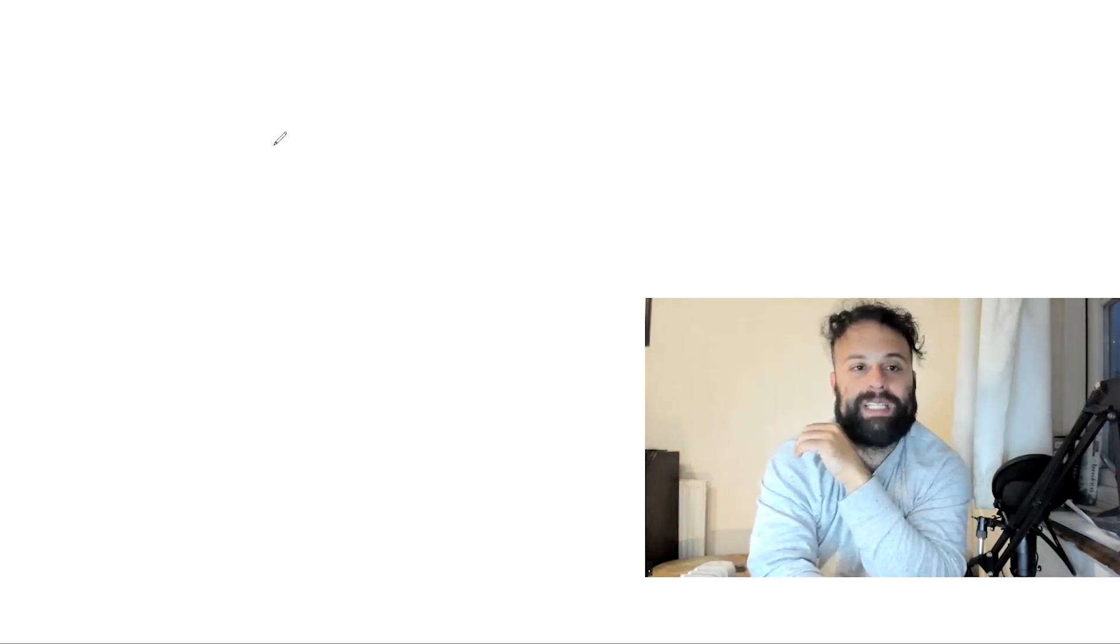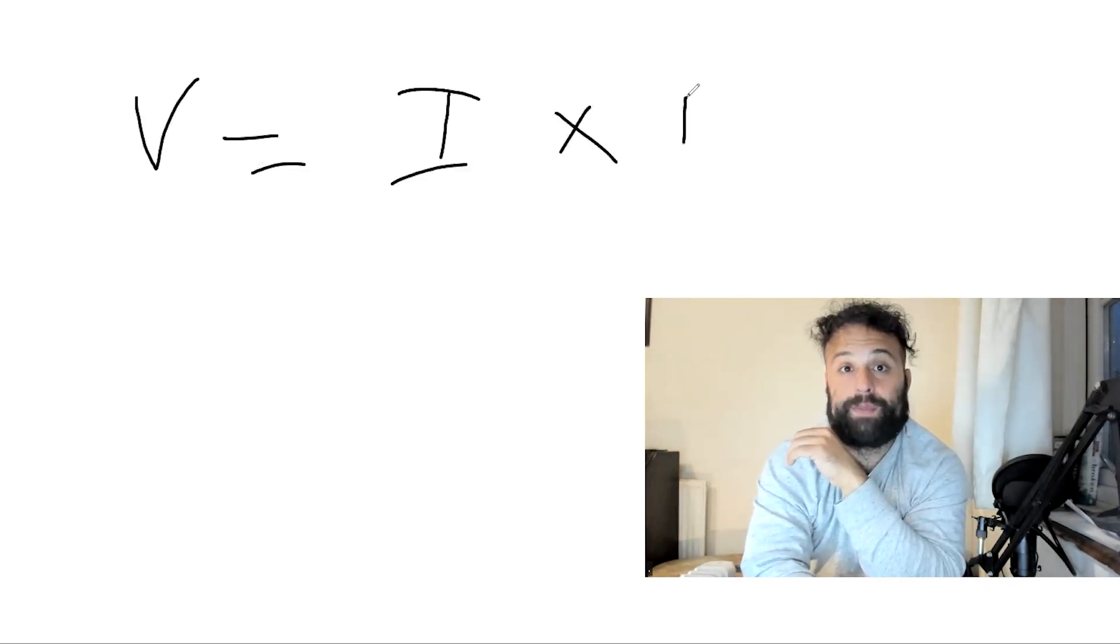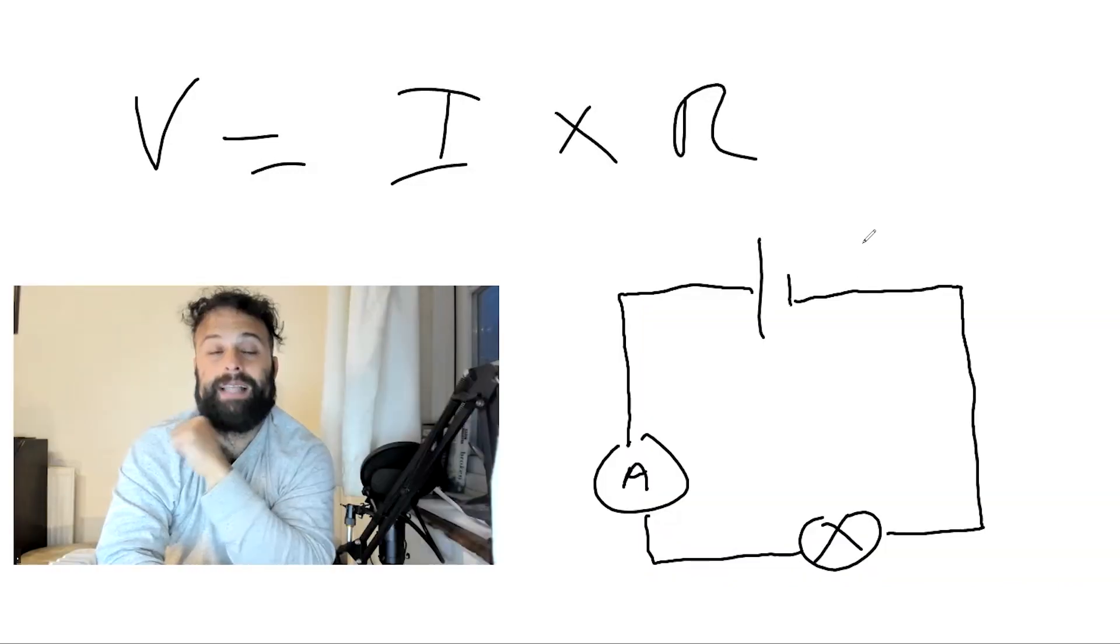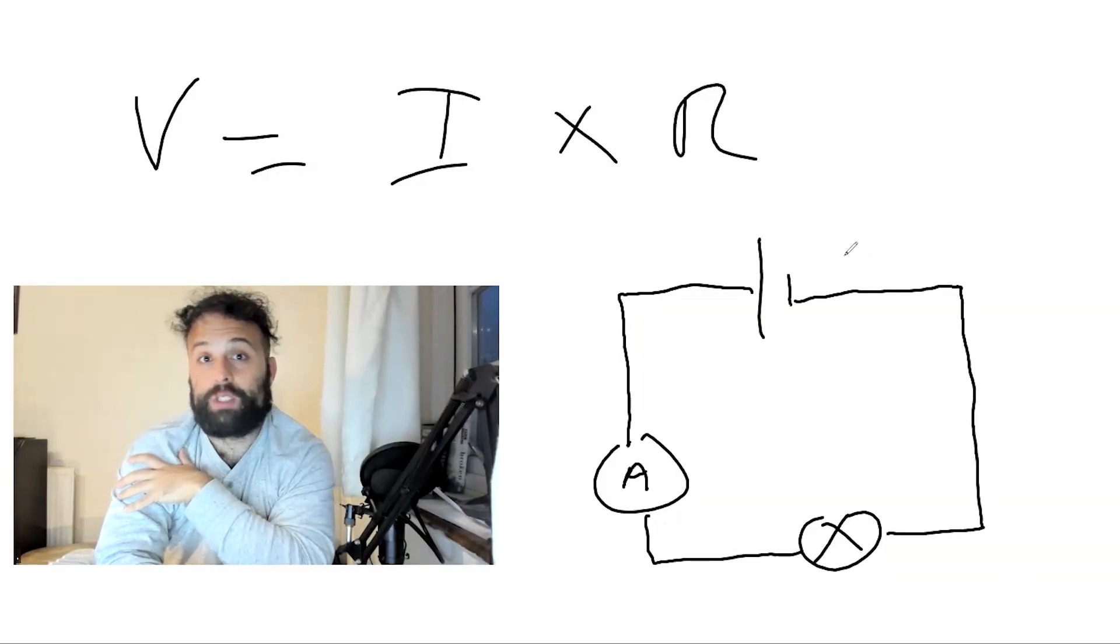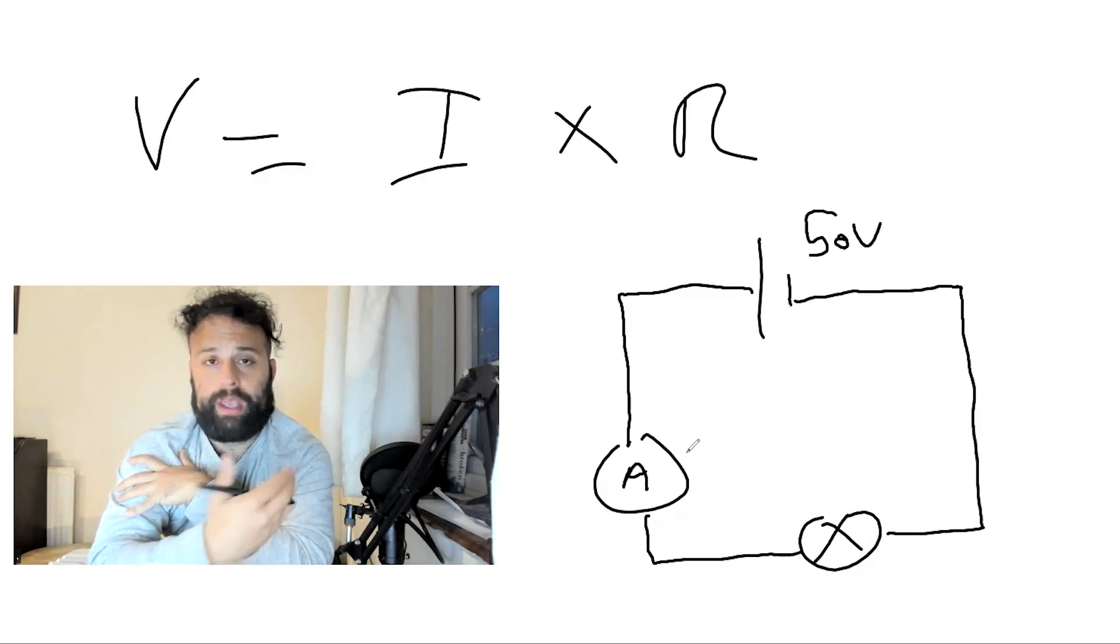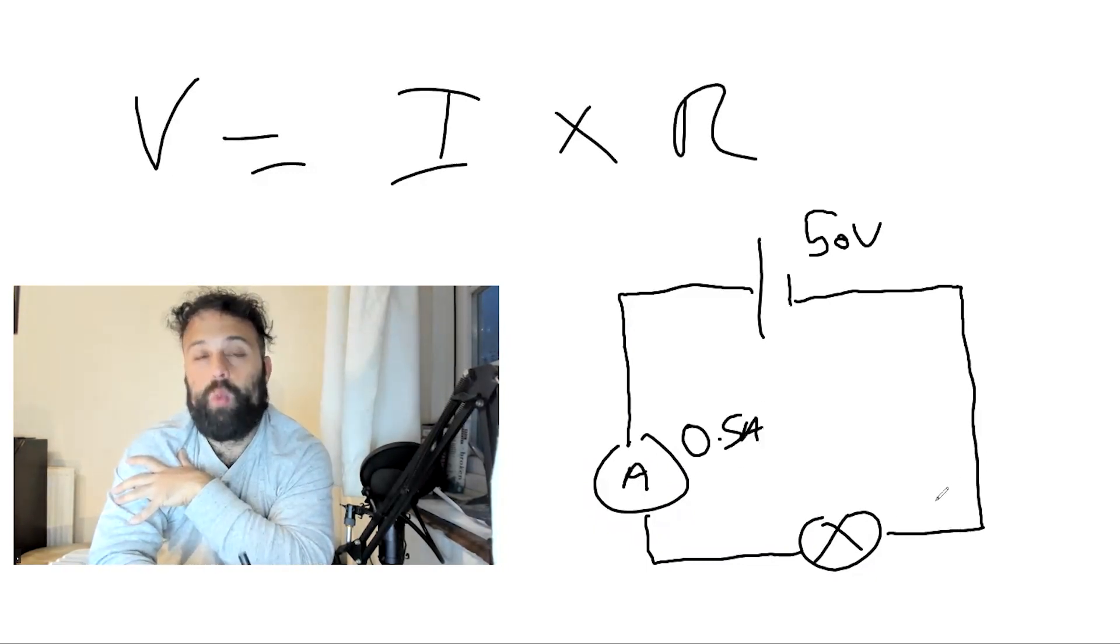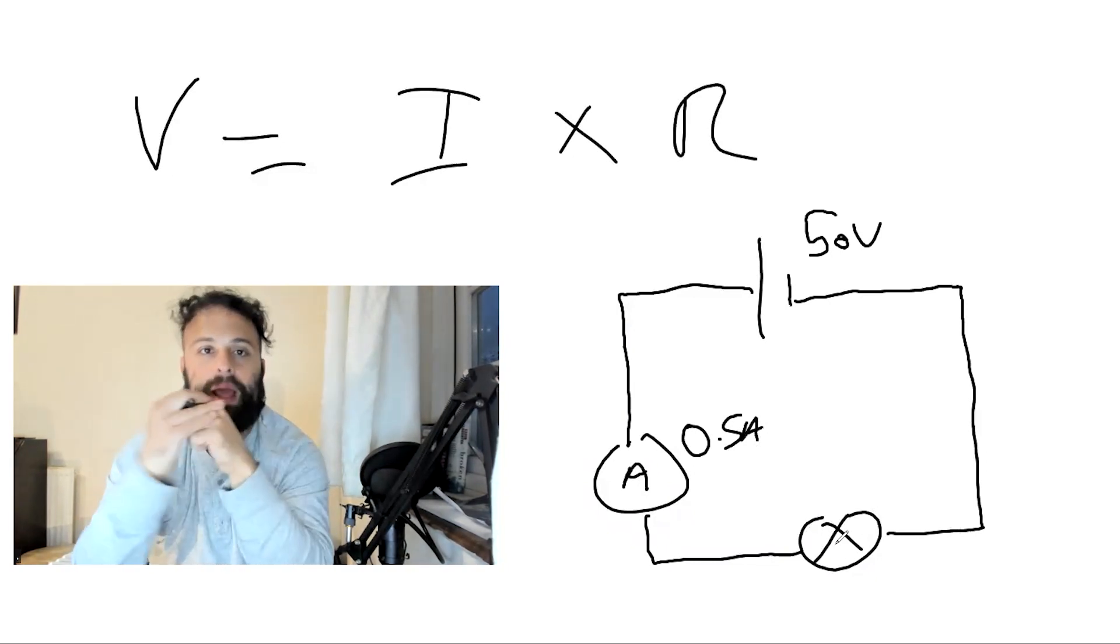Let's go back to Ohm's rule, where voltage is equal to current times by resistance. Let's say the circuit has a voltage of 50 volts, and let's say the current found in the circuit in the ammeter was 0.5 amps. What is the resistance of the actual light bulb?